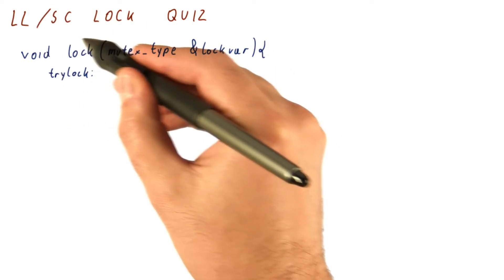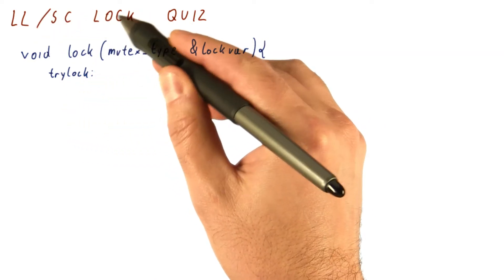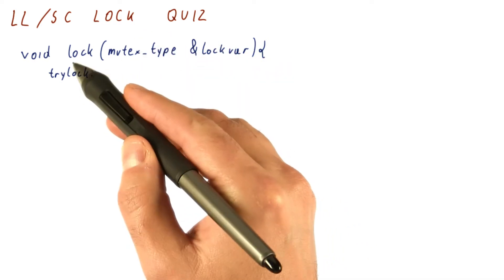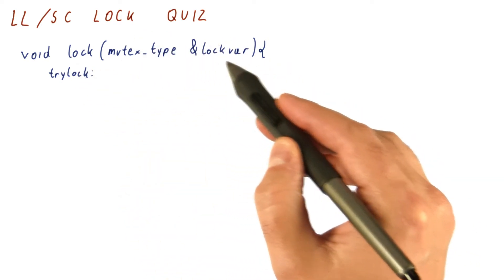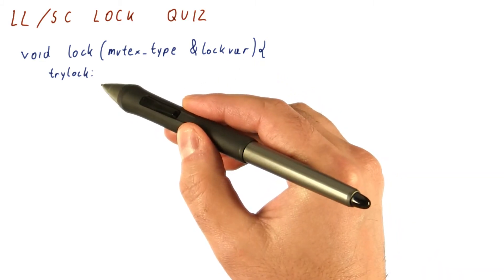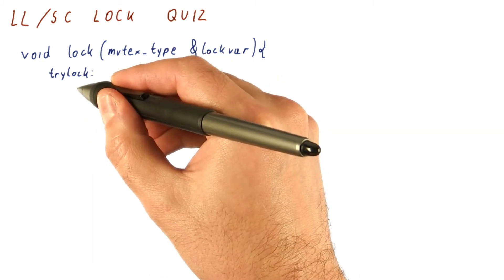So let's see if we can use load link store conditional to implement a lock function. The lock function takes a reference to variable lockvar, and then in assembler, it will do something like this.